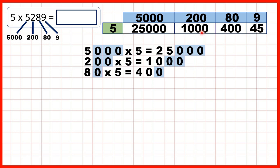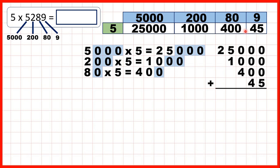So now that we've filled out our grid, all we need to do is add up the numbers that are on the grid. And when we do that we get our answer 26,445.